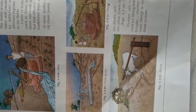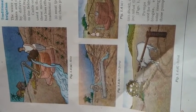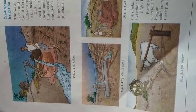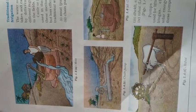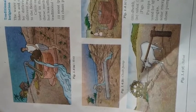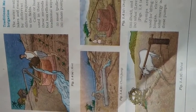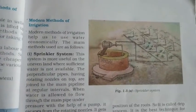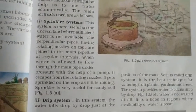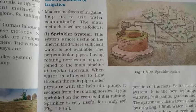These traditional methods were used in ancient days, but now in the 21st century we have developed many scientific methods that give efficient results in the supply of water to crops. These are considered the modern methods of irrigation, which include the sprinkler system and the drip irrigation method.